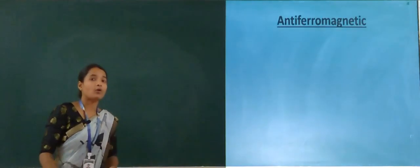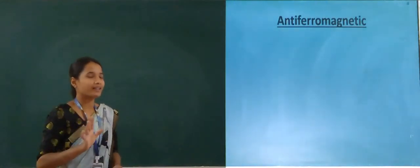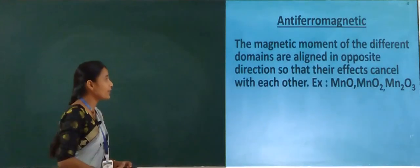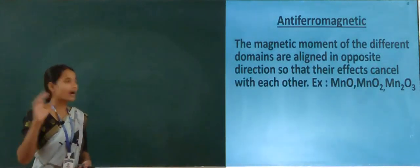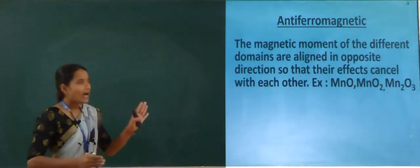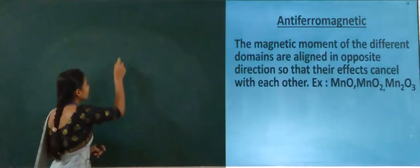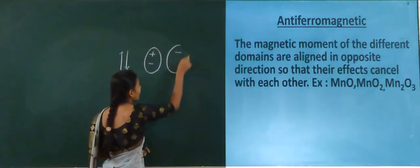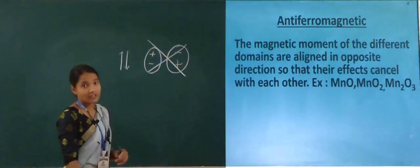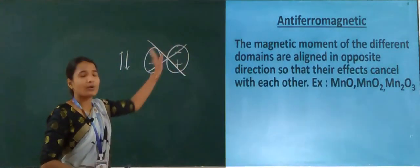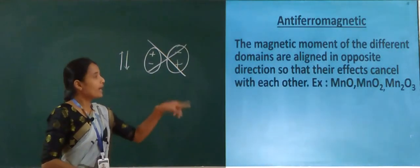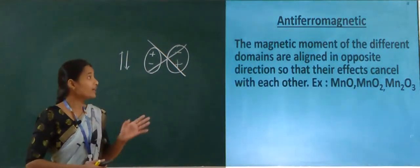The fourth property is anti-ferromagnetic. In anti-ferromagnetic substances, the magnetic moments of different domains are aligned in opposite directions, so they cancel each other out. Examples include oxides of manganese: MnO, MnO₂, and Mn₂O₃.